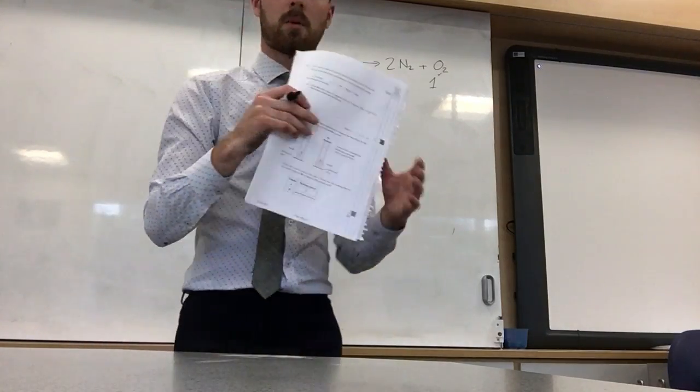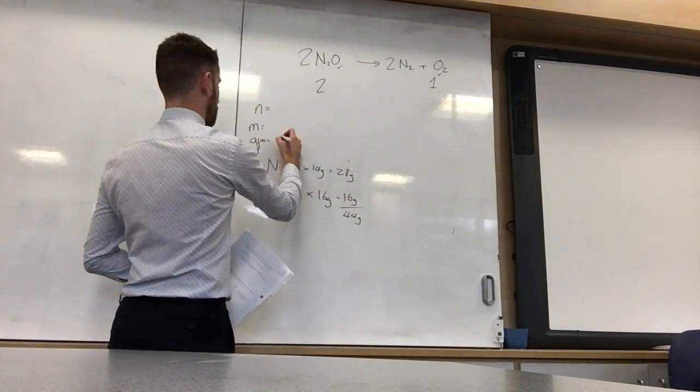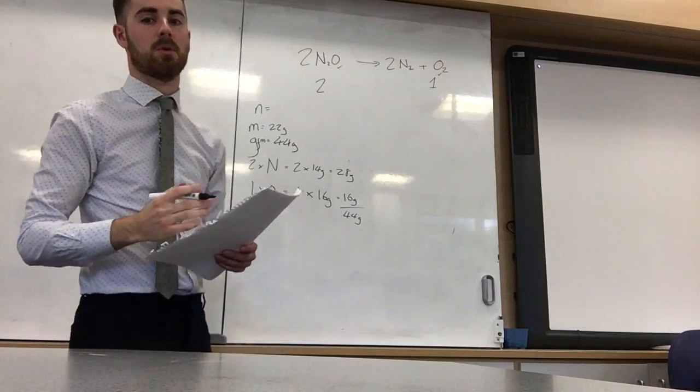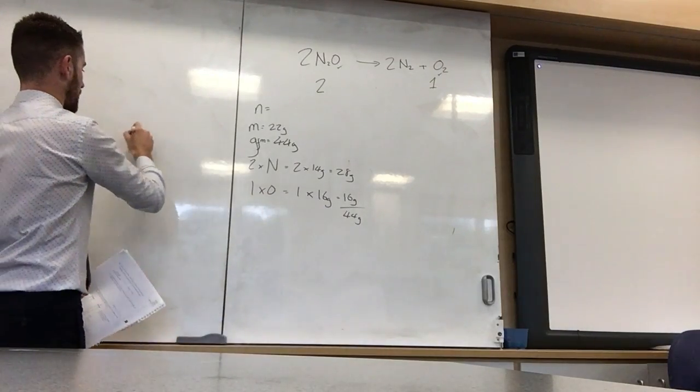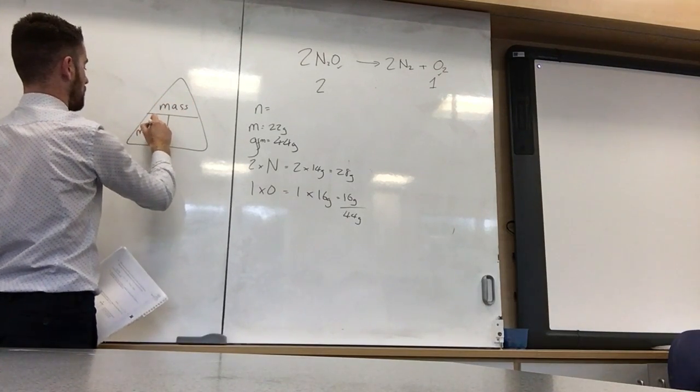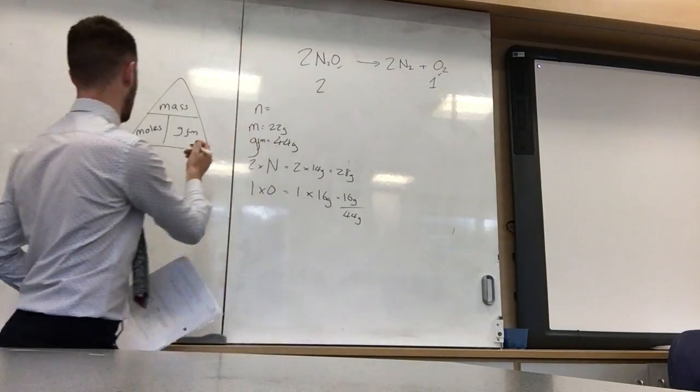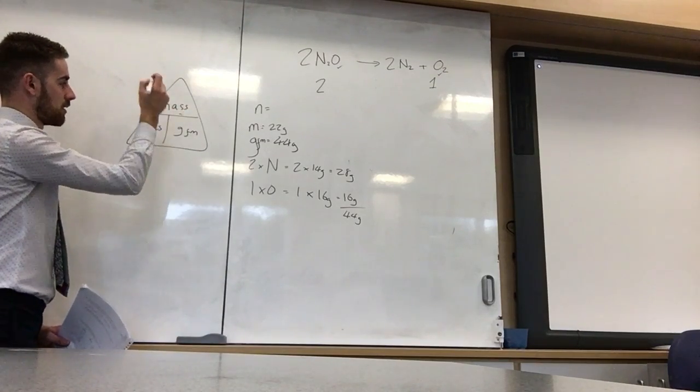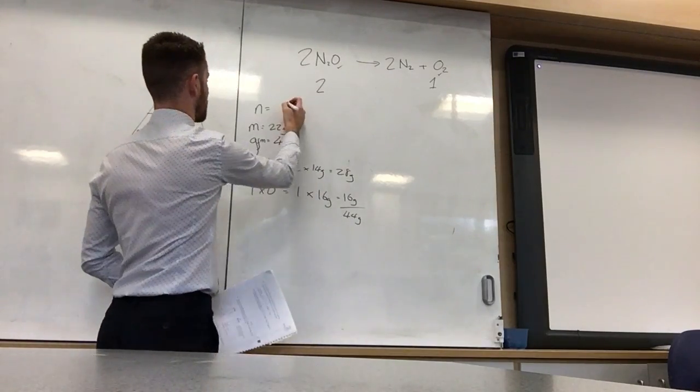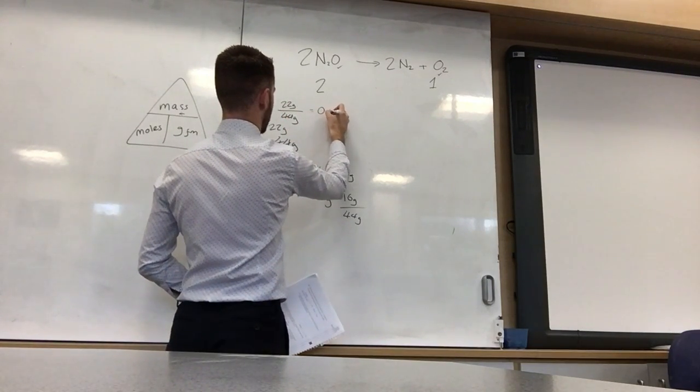Now the mass, if we look back at the question, the mass it tells us is 22 grams. So mass, put the gram formula mass into 44 grams. Mass, 22 grams. Okay, now how do we work out the number of moles? We'll use that triangle. So what's the top of the triangle? Top of the triangle we have mass. Bottom of the triangle, on the left hand side we have moles, and on the right hand side we have gram formula mass, or GFM. So to work out the number of moles, we will get mass divided by gram formula mass. Do we have the mass? Yes. Do we have the gram formula mass? Yes. So what we do is 22 grams divided by 44 grams gives you 0.5 moles.